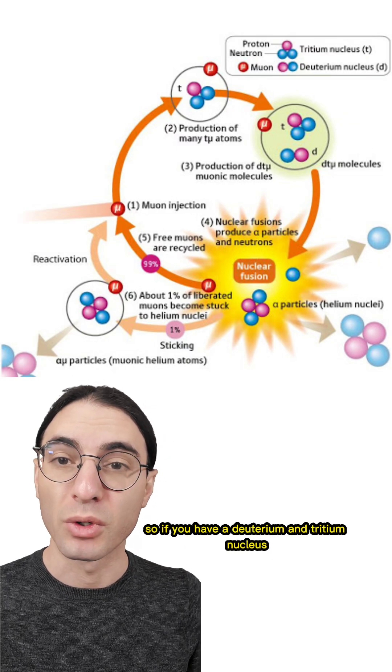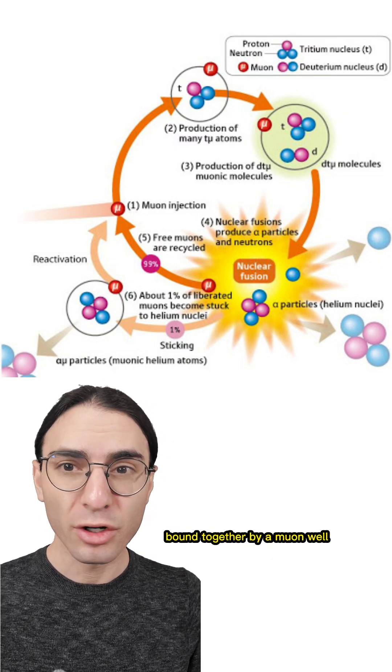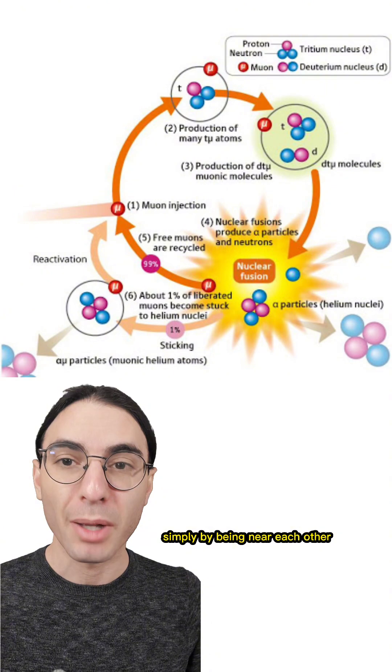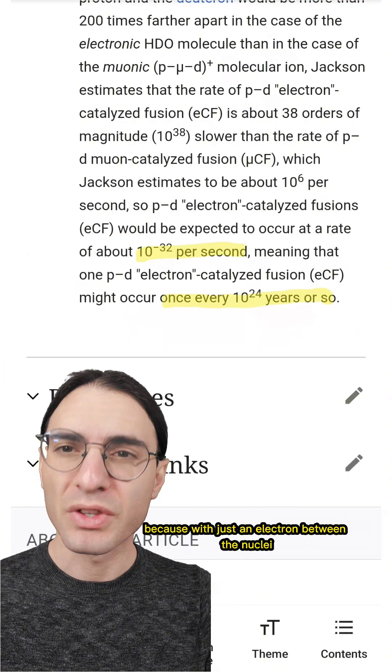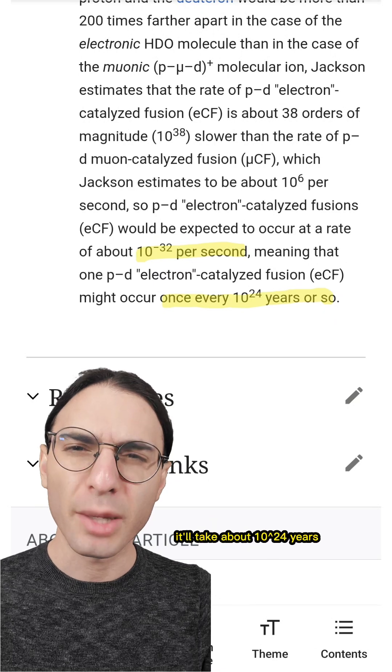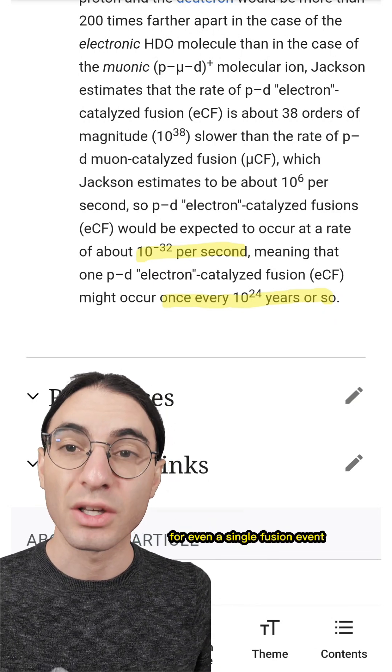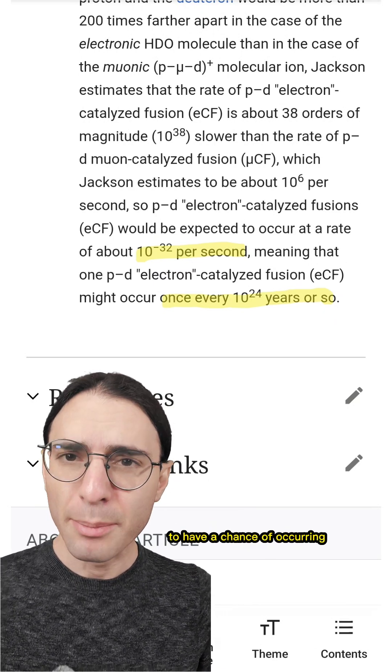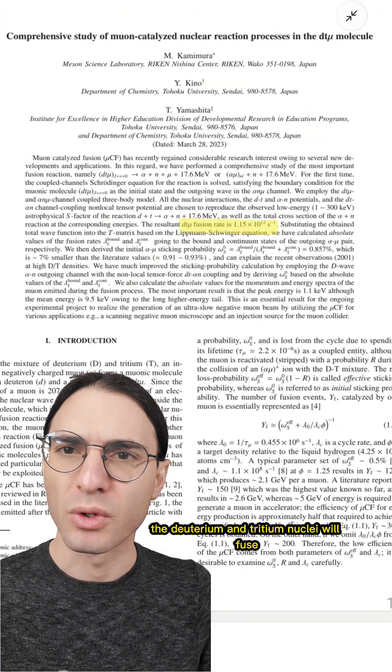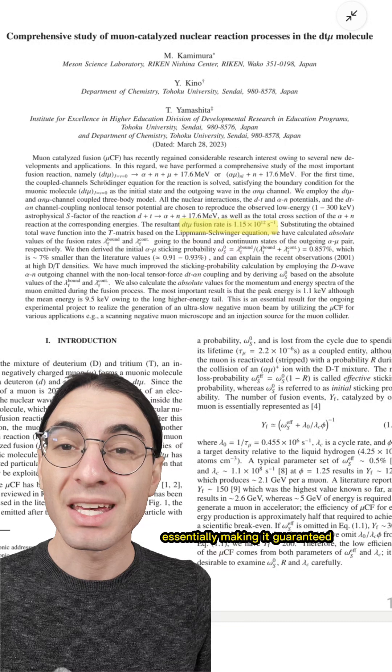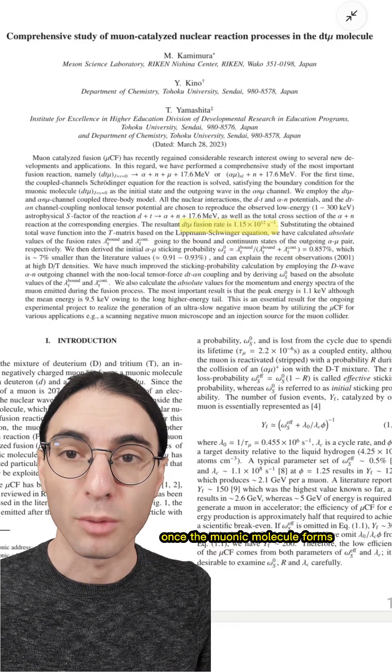So if you have a deuterium and tritium nucleus bound together by a muon, well, then it'll be very easy for them to fuse simply by being near each other. No obscenely high pressure or temperature required. And that's great, because with just an electron between the nuclei, it'll take about 10 to the 24 years for even a single fusion event to have a chance of occurring. But if you just get those nuclei 200 times closer together, the deuterium and tritium nuclei will fuse in about a trillionth of a second, essentially making it guaranteed once the muonic molecule forms.